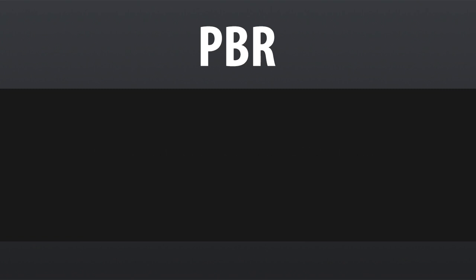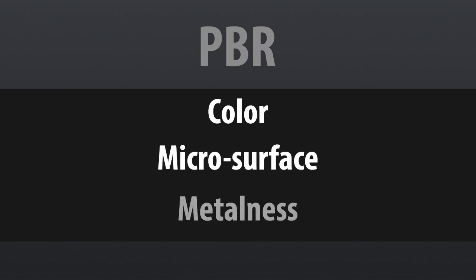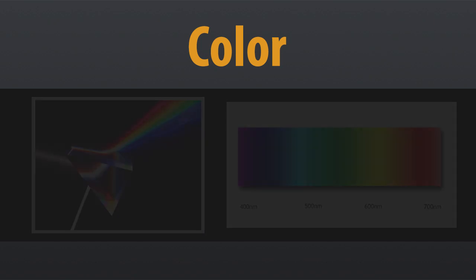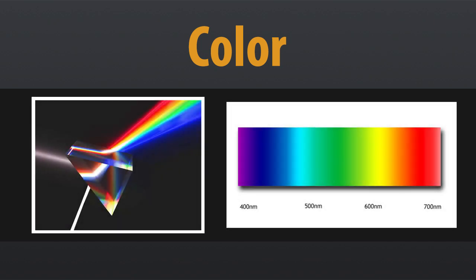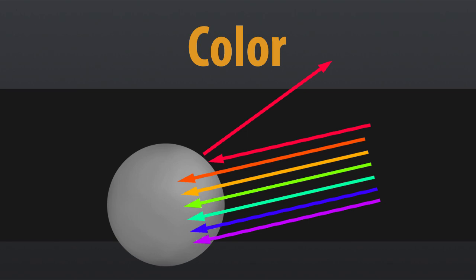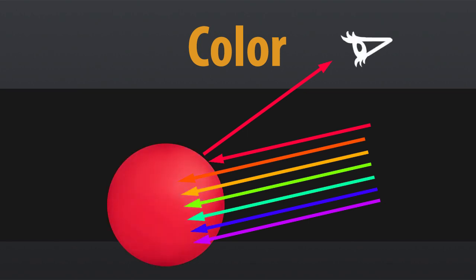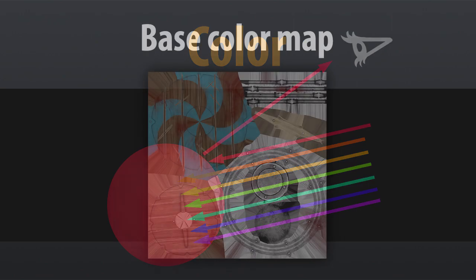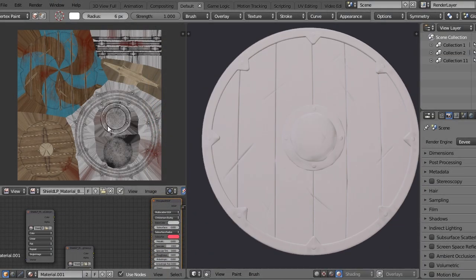There are some concepts that we must understand if we want to create or manipulate PBR textures. The first is color. This may be the most straightforward of the concepts and simply refers to the color that we perceive on the surface of an object. The rays of white light have all the colors of the visible spectrum, determined by wavelengths. When light rays hit the surface of a material, it absorbs several wavelengths and reflects others. These reflected waves determine the color we perceive, and in video games this is controlled by a base color map or an albedo map.